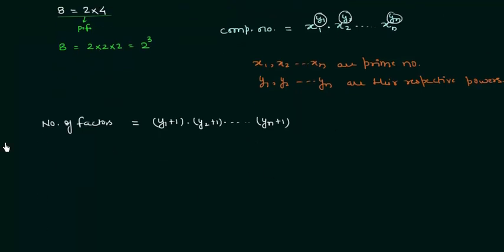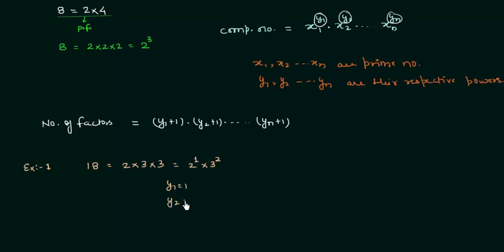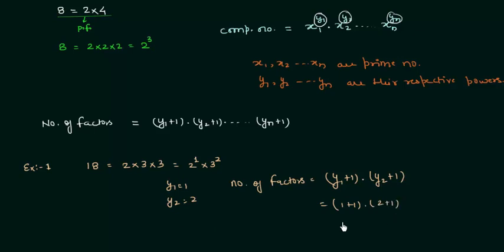Let's find the number of factors of composite number 18. I can write 18 as 2 multiplied by 3 multiplied by 3. Since 2 and 3 are prime numbers, we have 2 raised to power 1 and 3 raised to power 2. So y1 equals 1 and y2 equals 2. The number of factors equals (y1 plus 1) multiplied by (y2 plus 1), which is (1 plus 1) multiplied by (2 plus 1), giving us 2 multiplied by 3, which equals 6.